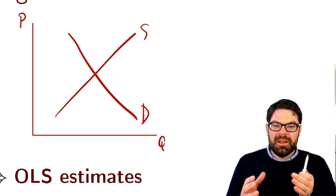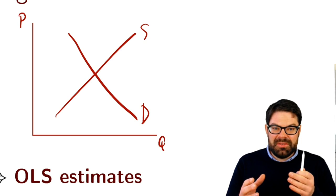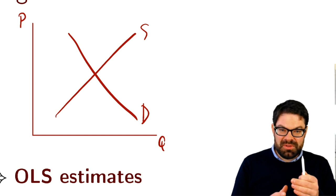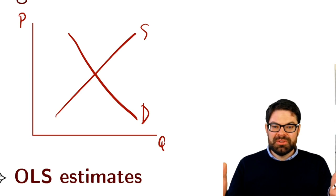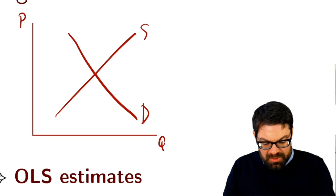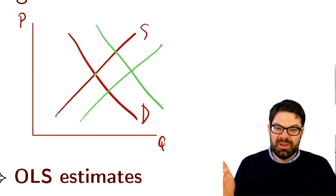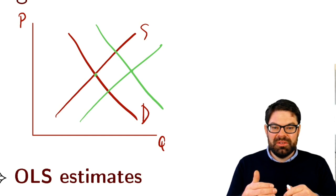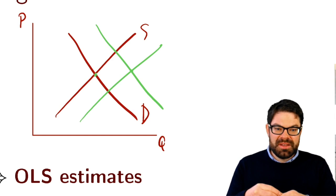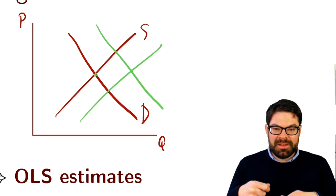Why? Because what you have is: on different trading days, you observe different prices and different quantities traded. But that does not easily allow you to trace out what the supply and the demand curve are. You could simply have a situation where you have a shift in both the demand and the supply curve, with basically no change in prices but a change in quantity, or the other way around. In such a model, you would not know — based on the prices and quantities you observe — whether you identify a supply curve or a demand curve or something in between.